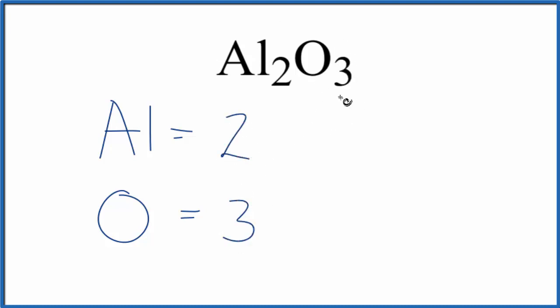So the total number of atoms for Al2O3, this aluminum oxide, is 3 plus 2. It's 5. So we have five total atoms in this aluminum oxide.